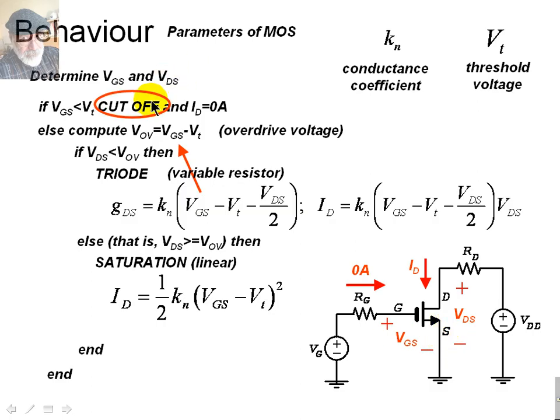The three modes of operation, then, for the transistor, are cutoff, triode, and saturation.